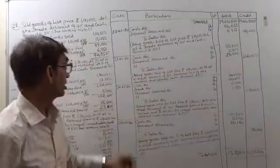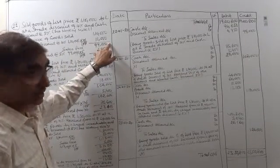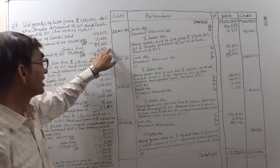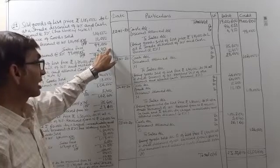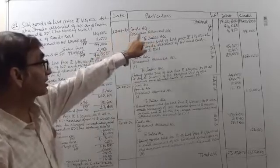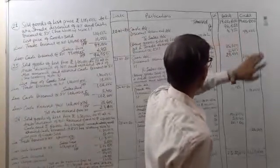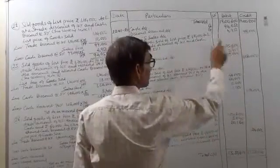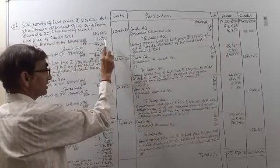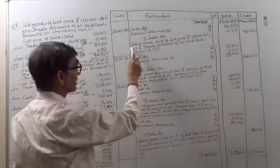Discount allowed is a loss — the firm should have received rupees 99,000 but is only receiving rupees 94,050 because a discount of 4,950 was allowed. It is a loss of revenue, and losses are debited. So discount allowed account will be debited 4,950. And the goods going out were of rupees 99,000.